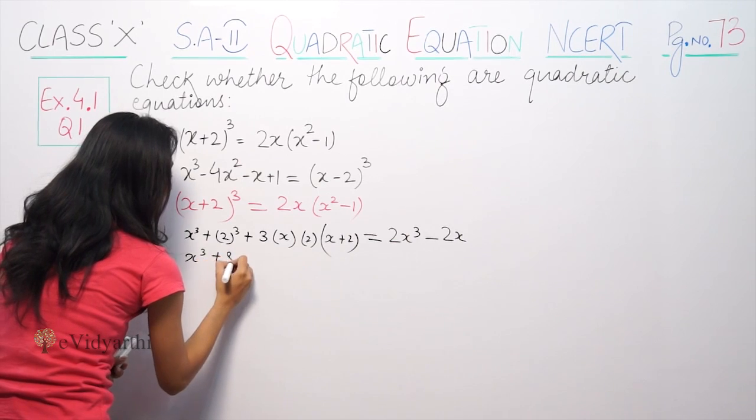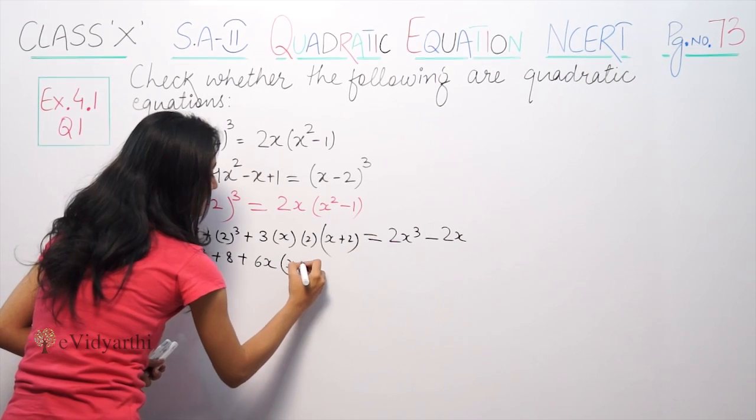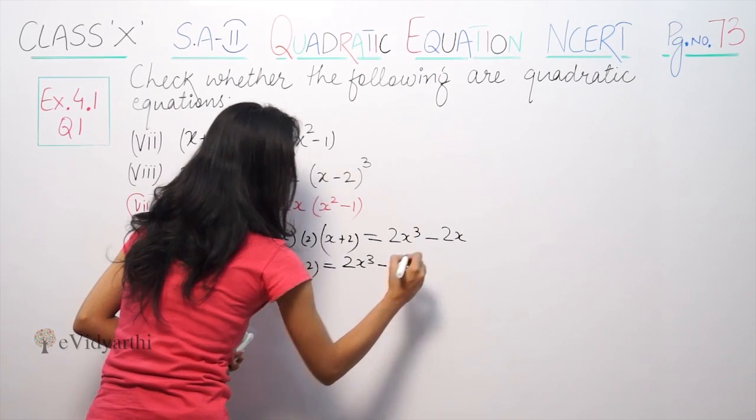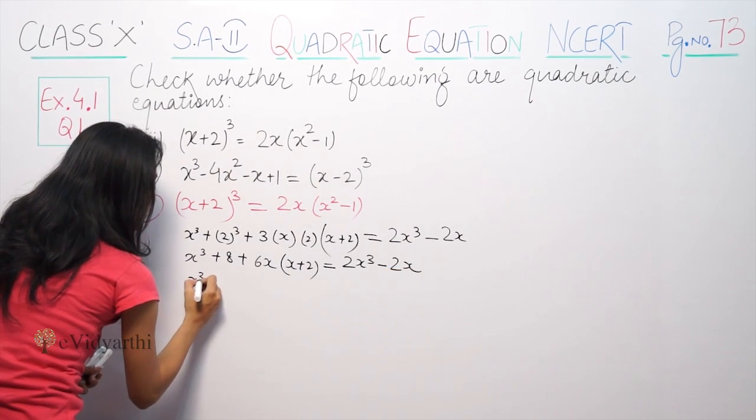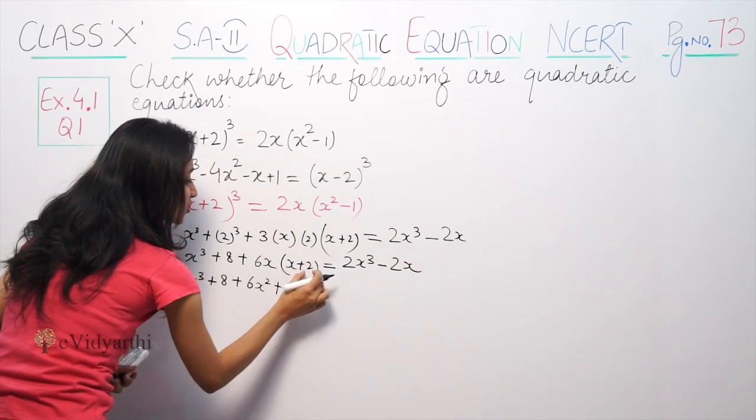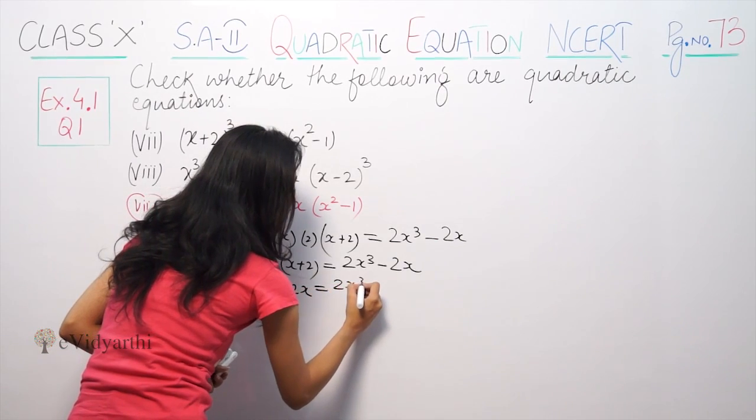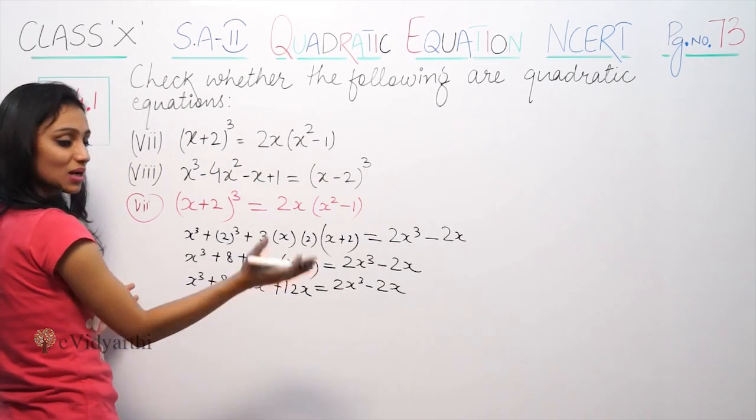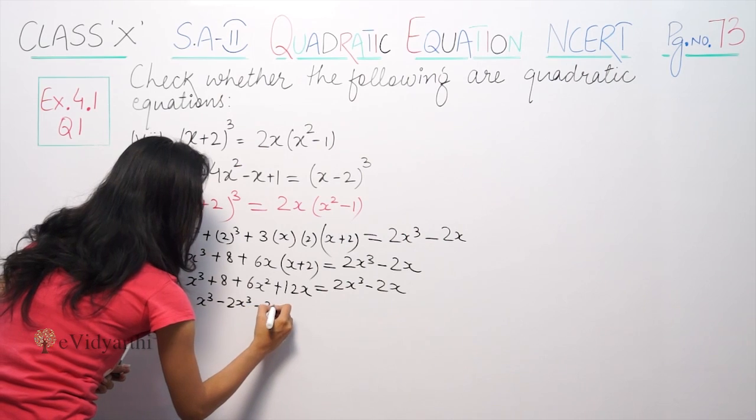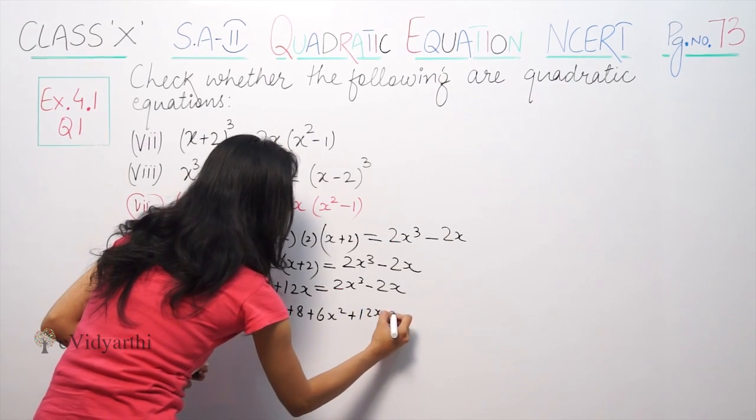So it becomes x³+8, 3 times 2 times 6 into x is 6x in bracket (x+2). Is equal to 2x³-2x. So x³+8+6x²+12x is equal to 2x³-2x. Now bringing all terms to one side.